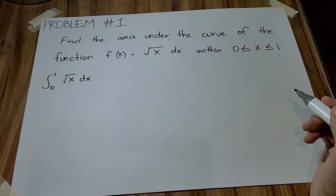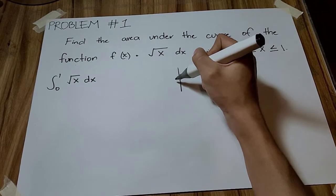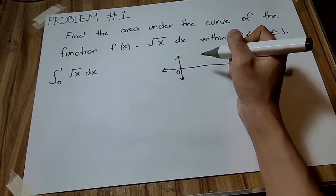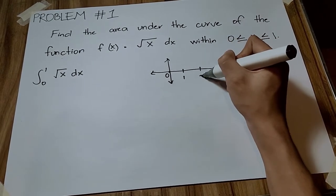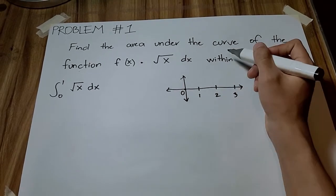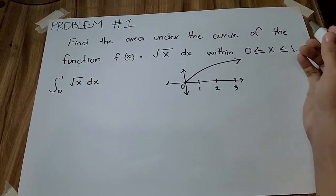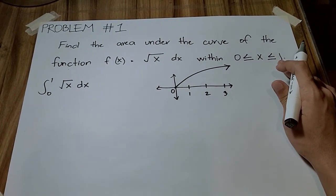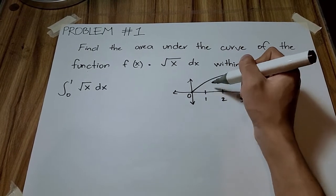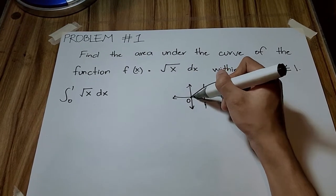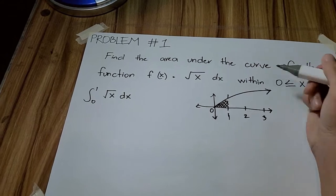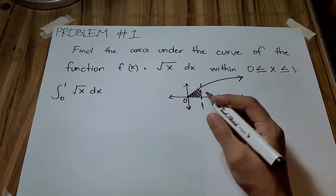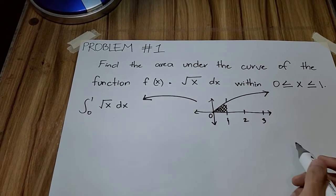Now, when we graph this function, it will look like this. The center is 0, then 1, 2, 3, and it has a curve. From the lower limit of 0 and the upper limit of 1, here is your area. We can find the value of this area by solving the function and getting the anti-derivative.